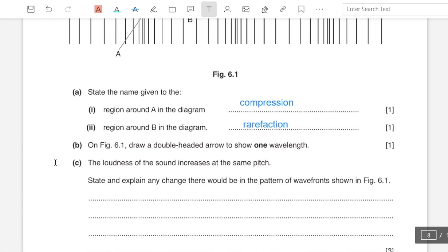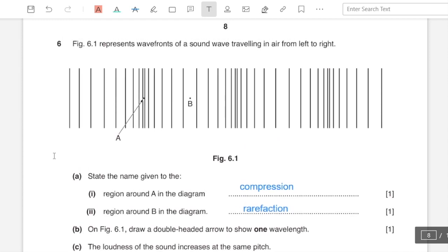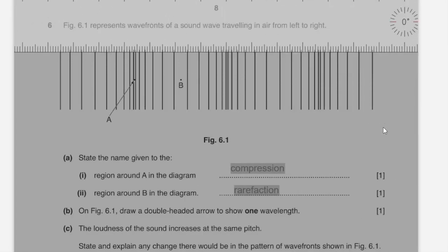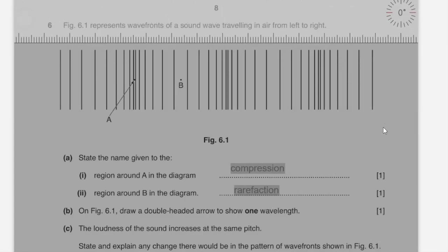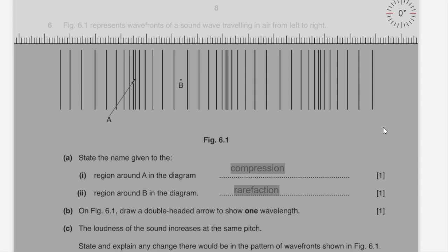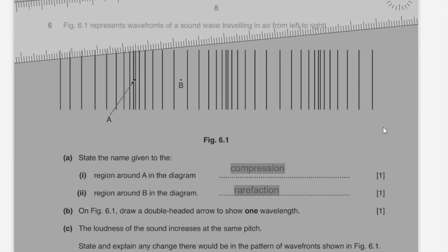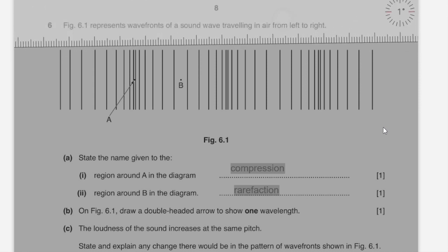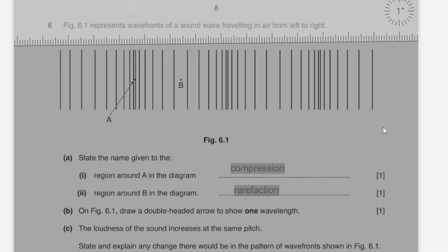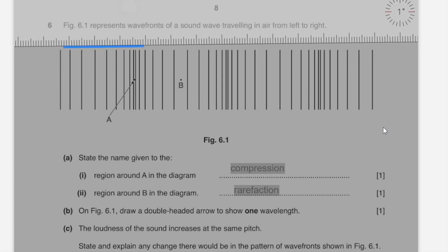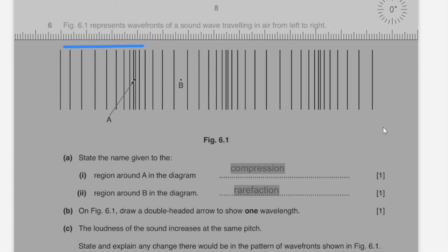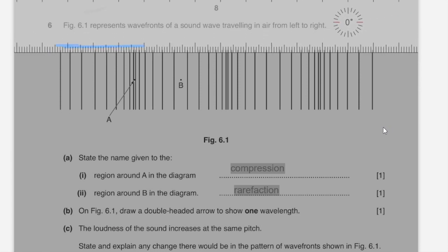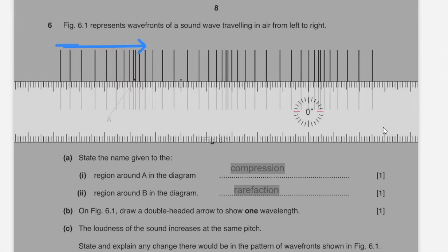Region b is the rarefaction. Part b: on figure 6.1, draw a double-edged arrow to show one wavelength. So one wavelength is basically starting from one end to the other, one complete wave, which also has a single compression and a single rarefaction area.